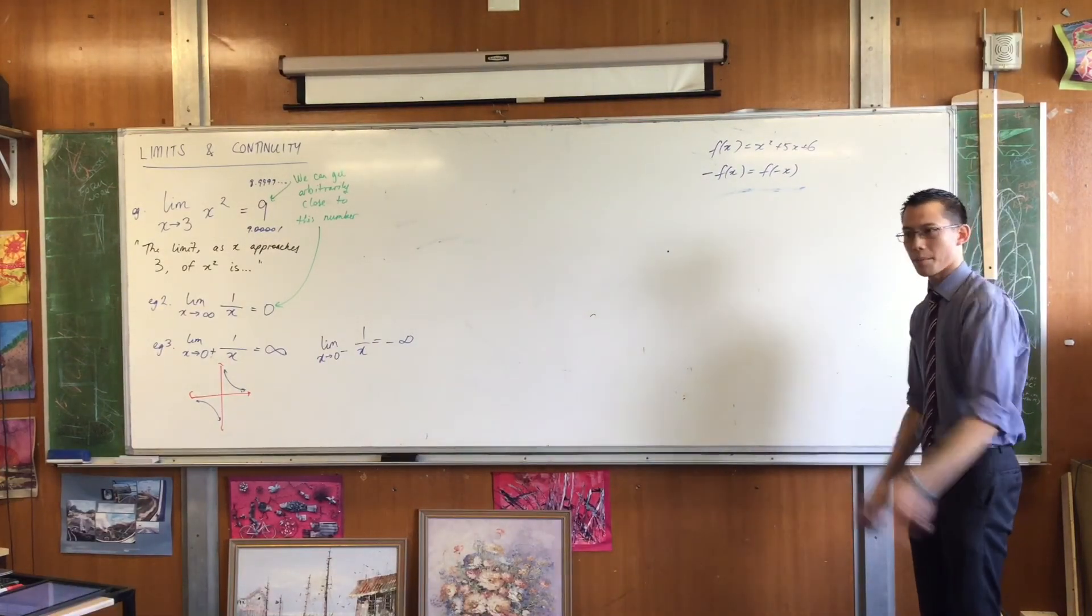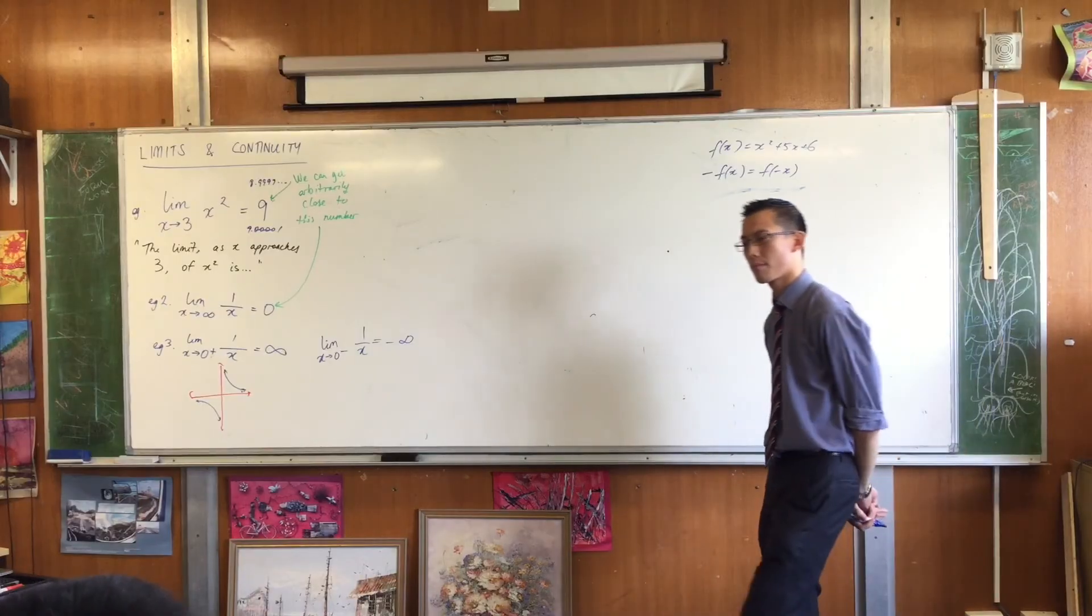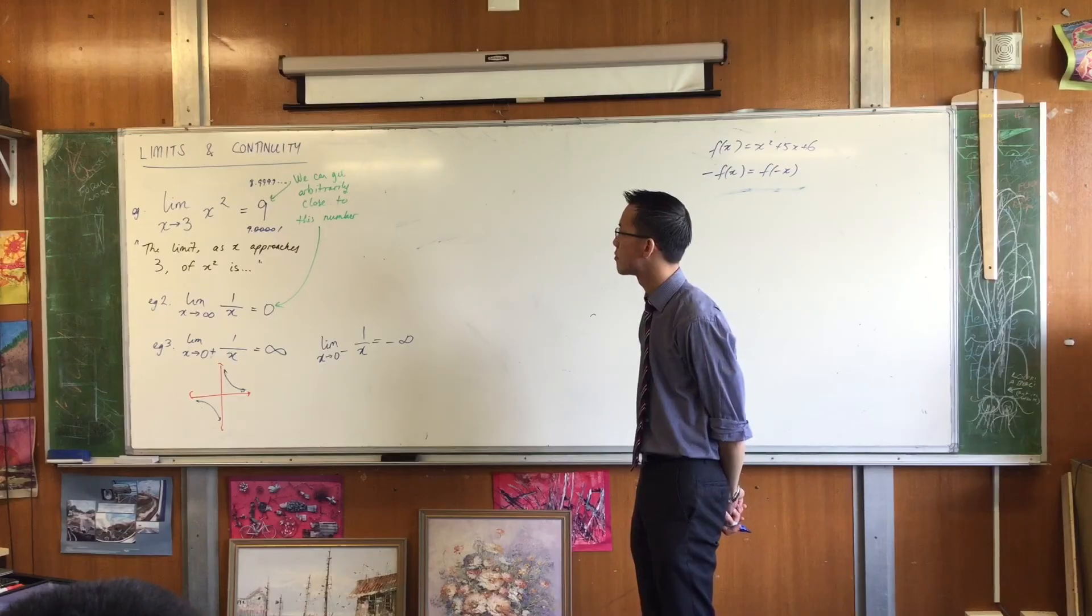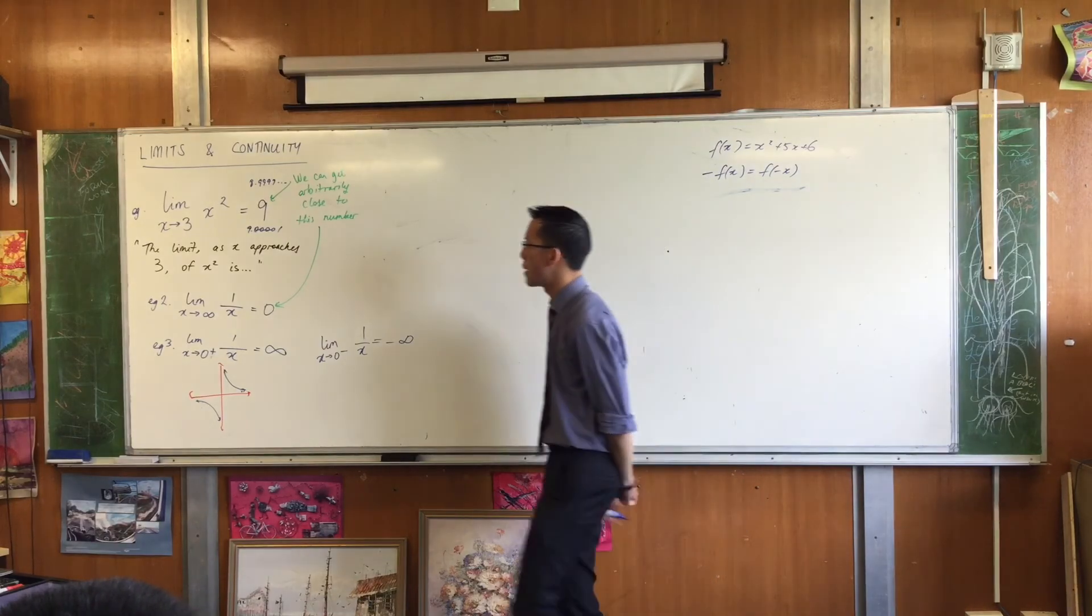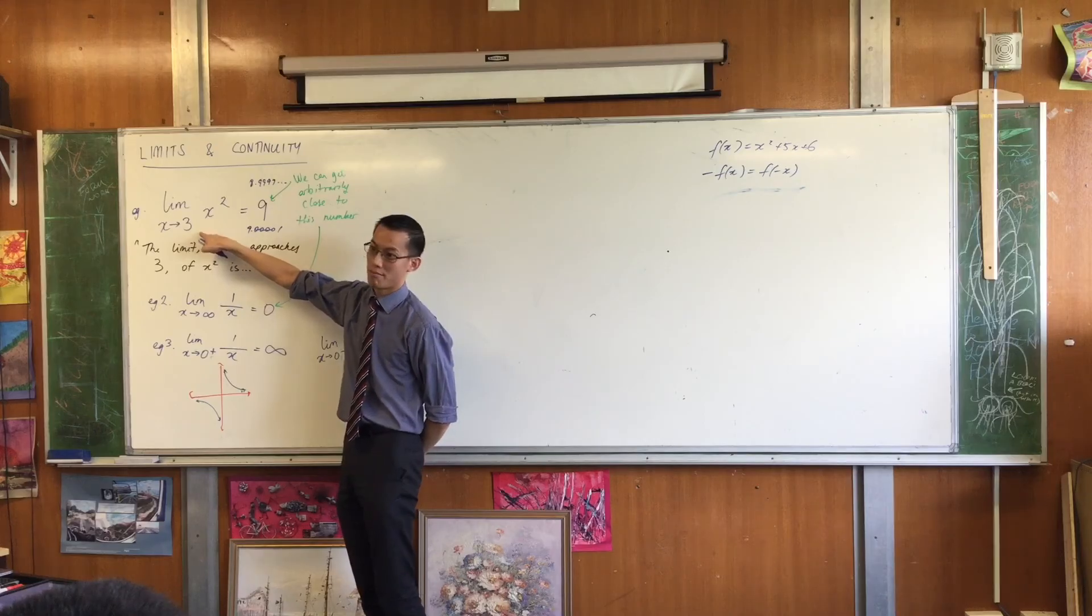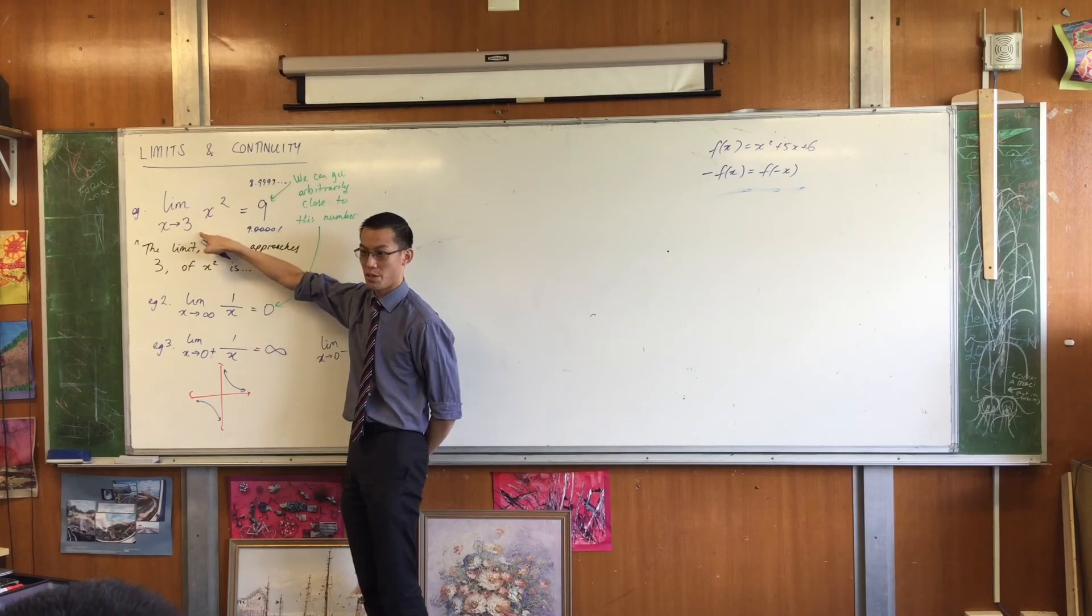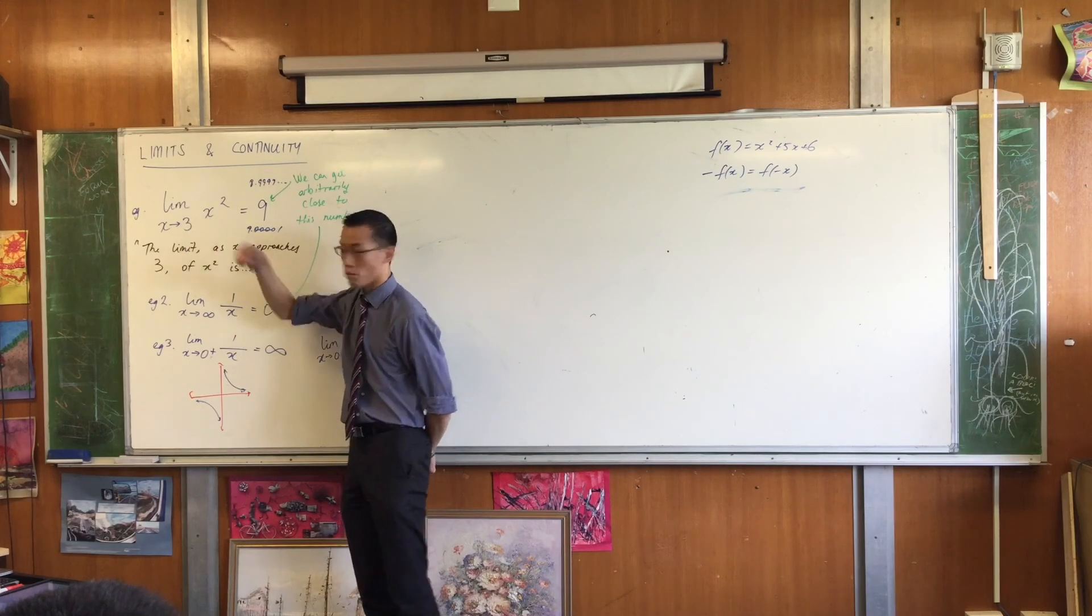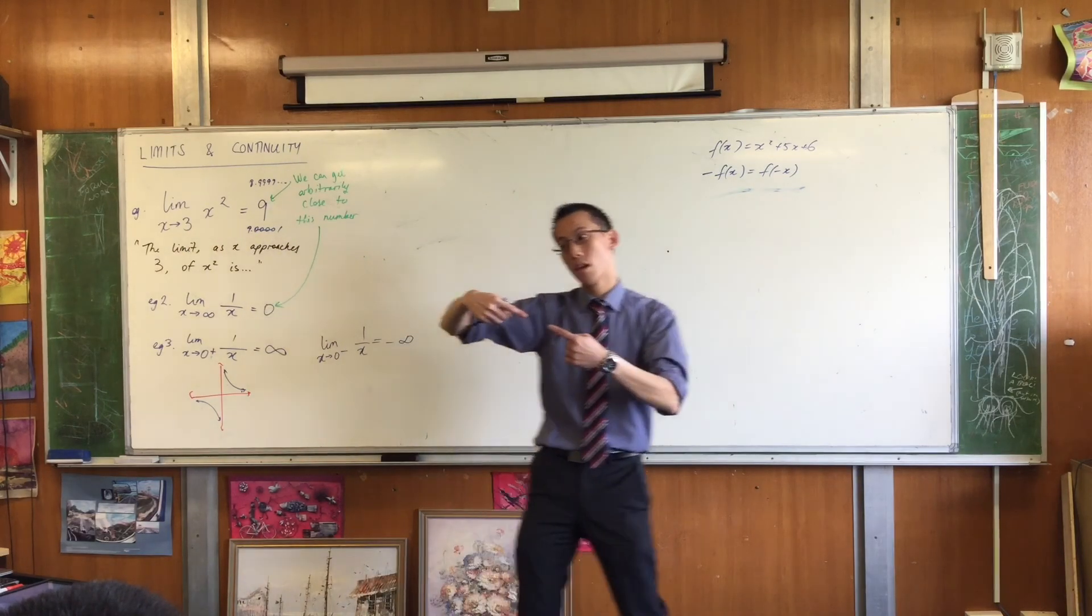All right, are you happy with that here? Yeah? So for limit, if x is going to, say, how can you get a number that's close above 9? Because, like, if... By putting in 3.01, or 3.00001, or 3.00001, I just put in numbers that are above 3, because I can approach 3 from two different directions, right?